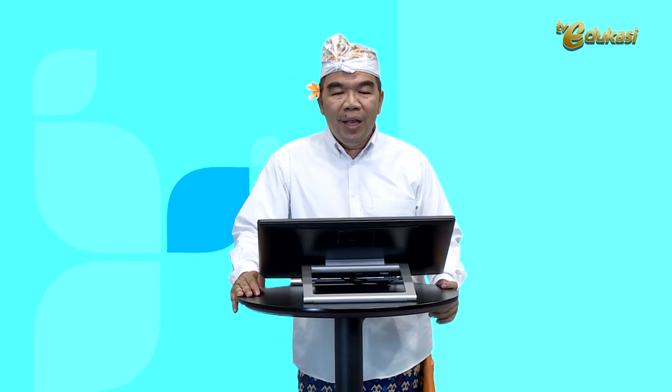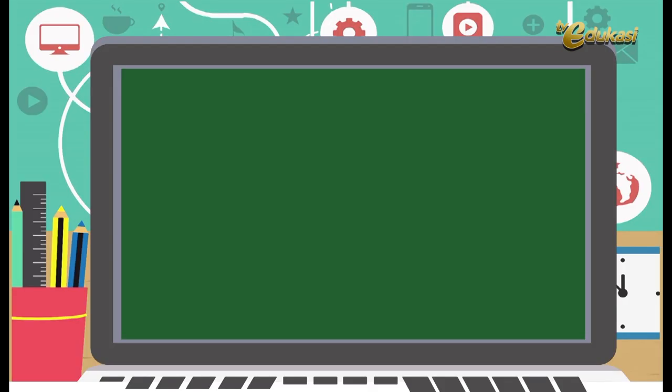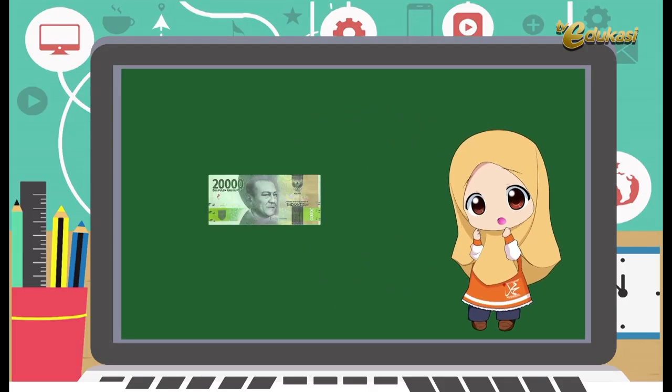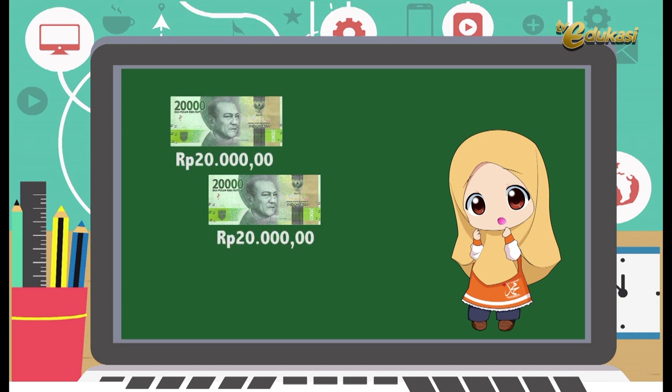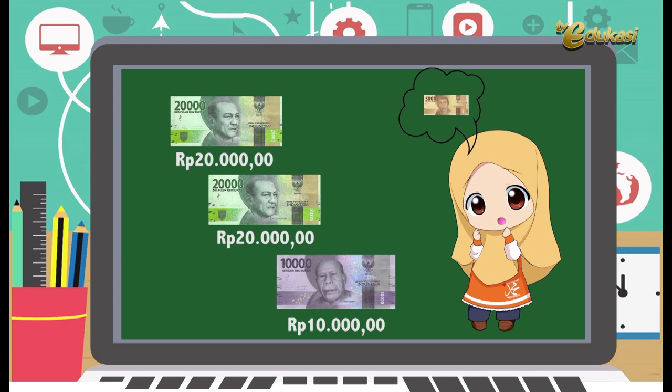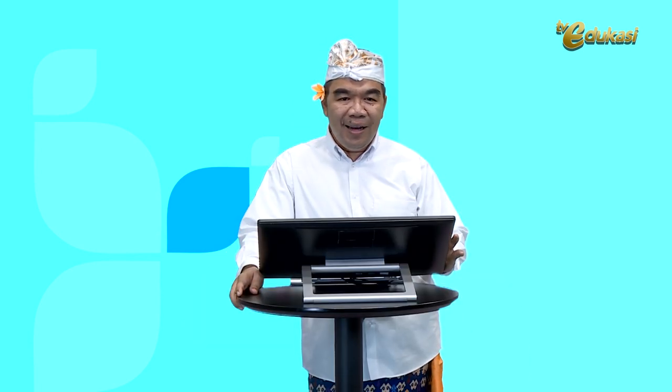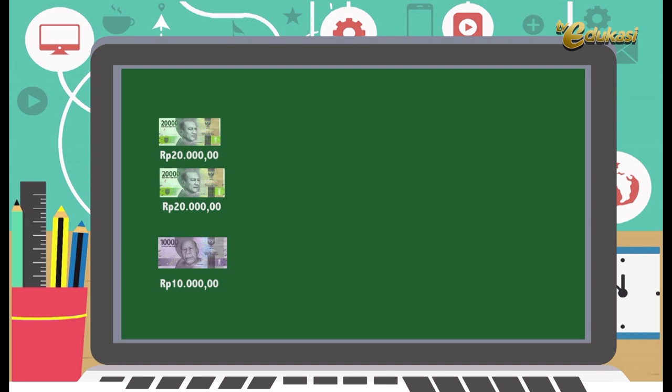Ingat, belajar matematika bersama Pak Ridwan, matematika menjadi lebih mudah. Bapak akan memberikan soal tentang pecahan mata uang dalam bentuk HOTS atau Higher Order Thinking Skill atau berpikir tingkat tinggi. Perhatikan soal berikut ini: Kakak memberikan sumbangan untuk anak yatim sebesar 2 lembar uang 20.000 rupiah dan 1 lembar uang 10.000 rupiah. Jika sumbangan diberikan dalam bentuk uang 5.000 rupiah, maka berapa maksimal anak yatim yang menerima sumbangan? Soal ini memang menarik. Informasi: uang yang disumbangkan 2 lembar uang 20.000 rupiah dan 1 lembar uang 10.000 rupiah.